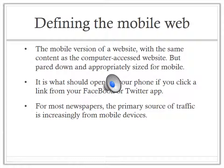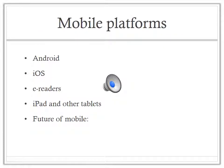When I talk about the mobile web, all I'm referring to is the mobile version of a website — with the same content as the computer-accessed website but pared down and appropriately sized for mobile. It's what should open on your phone if you click a link from your Facebook or Twitter app, and for most newspapers it's the primary source of traffic.